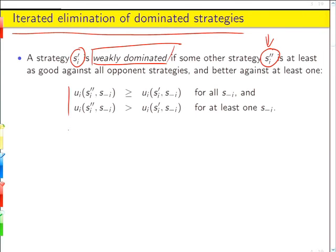This is sort of a math notation way of saying that. If the utility that you get from playing s_i double prime against anything that your opponent does is always at least as big as playing s_i prime against anything that your opponent does, and strictly bigger than playing s_i prime for at least one possible strategy that your opponent could have pursued, then we say that s_i prime is weakly dominated.